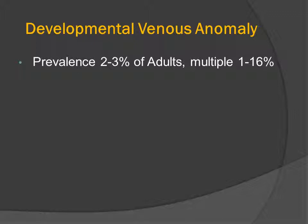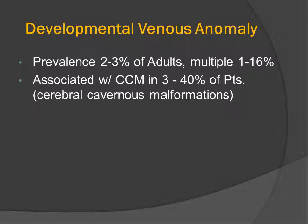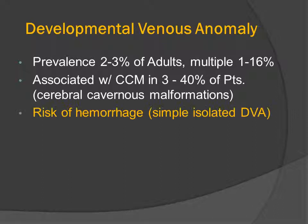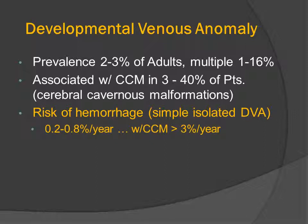Developmental venous anomalies are probably the most common kind of vascular malformation, with a prevalence estimated to be 2-3% in asymptomatic adults, and approximately 1-16% of patients will have multiple venous anomalies. 3-40% of patients with DVAs will also have an associated cerebral cavernous malformation. The risk of hemorrhage in a simple isolated DVA is probably less than 1% per year, but with an associated cerebral cavernous malformation is probably much higher, approximating the rate of hemorrhage of isolated cerebral cavernous malformations, which is greater than 3% per patient per year.